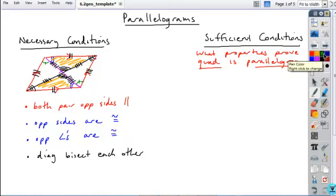I have about six different properties here. So I want to find out what did you guys find? What were some of the properties that you found by themselves are guaranteed to prove you have a parallelogram? Anybody willing to share one?